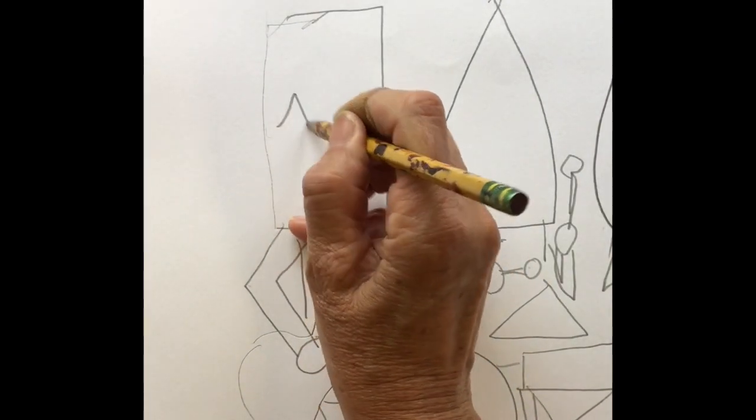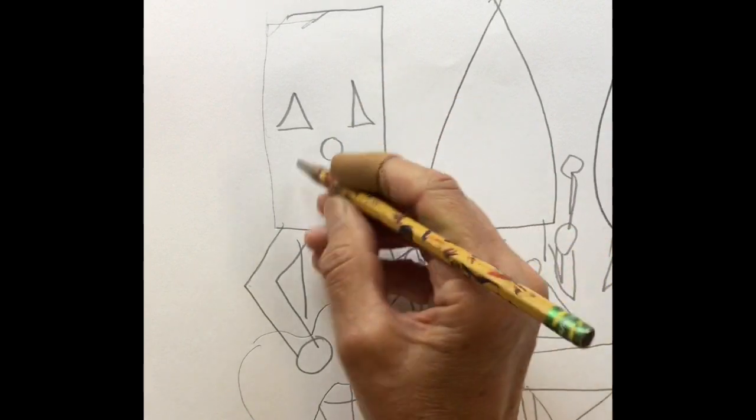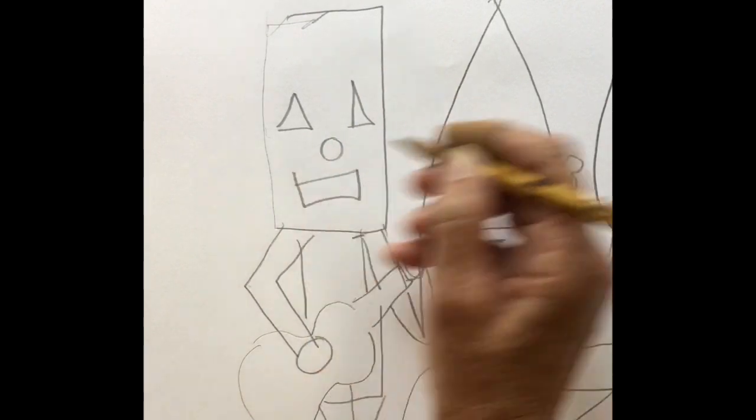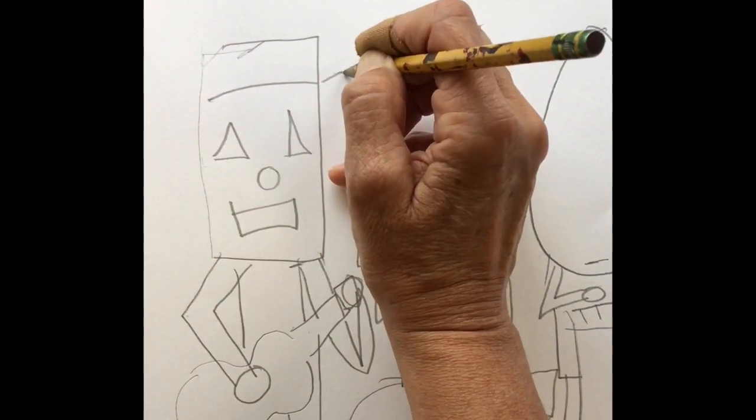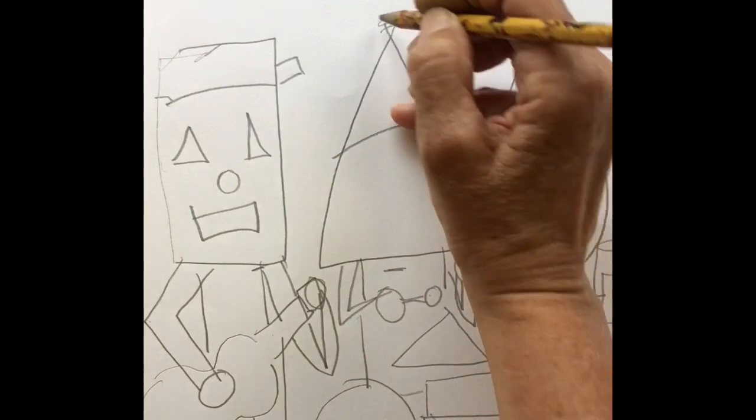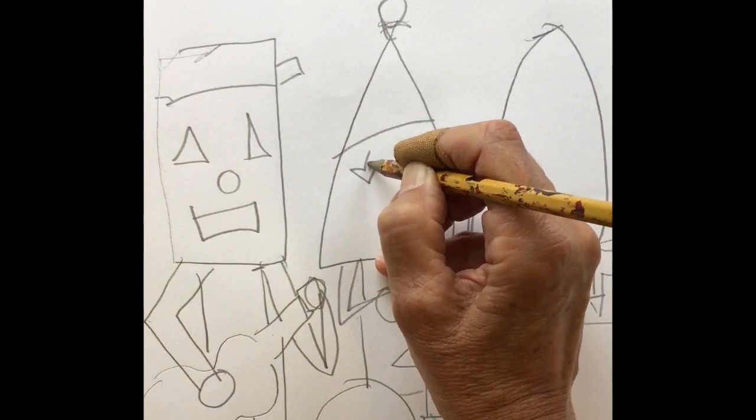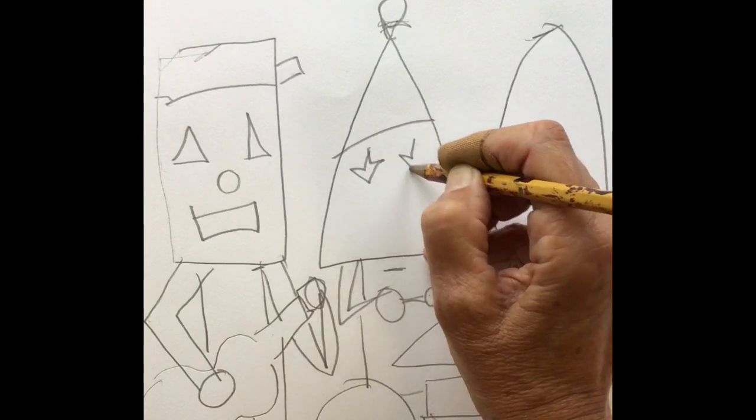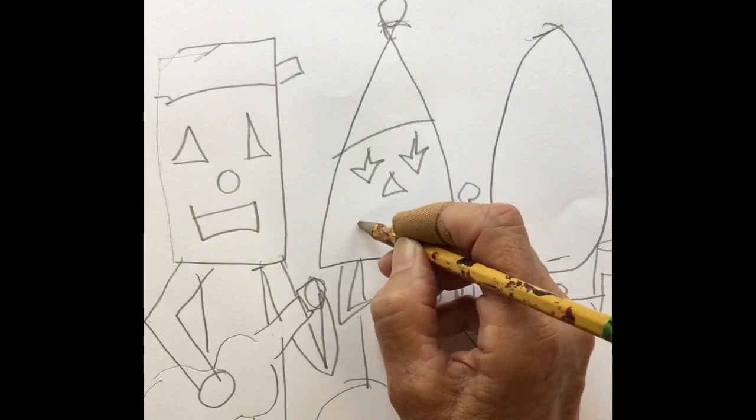Now I'm going to make faces on my musicians. I'm using shapes to make the faces too. Triangles, circles, rectangles. I might even give him a hat. This one's going to have a triangle hat too. Maybe even a circle on the top. His eyes are going to be shaped kind of like arrows pointing down. I'm going to give him a shape for his nose. Triangle. And a shape for his mouth. A triangle again.